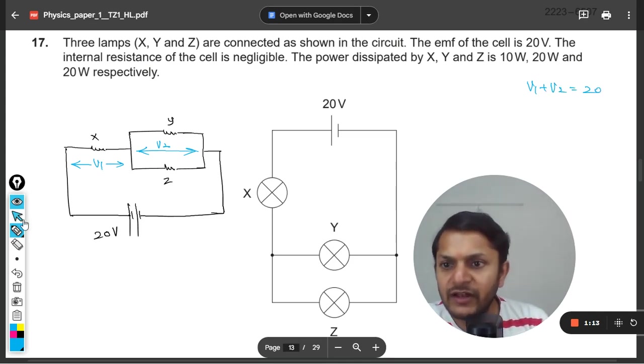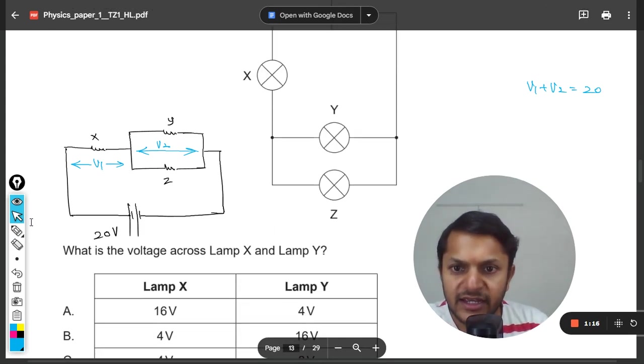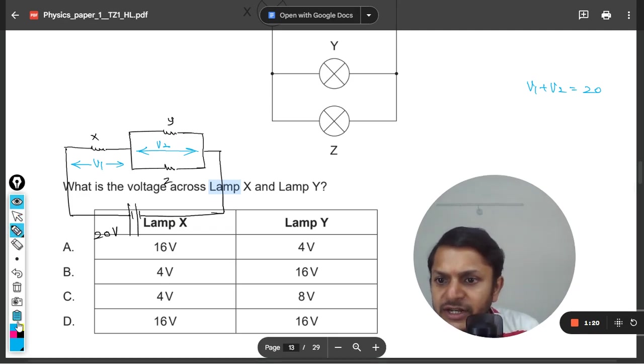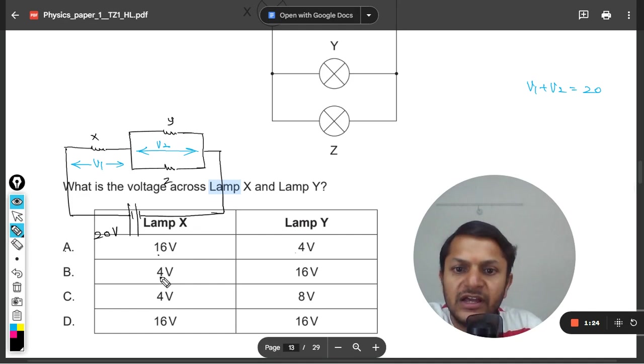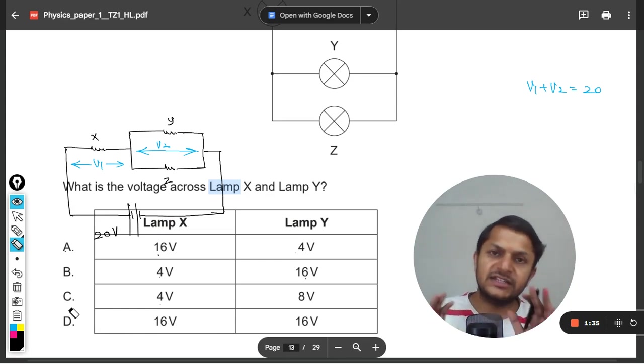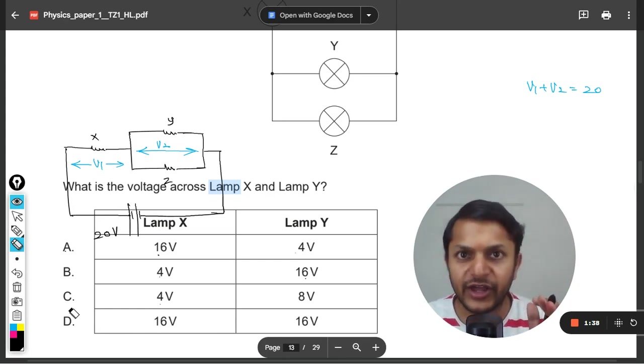Now one thing is sure: the sum total of V₁ and V₂ will be equal to 20 volts. With this information, we can clearly cross some of the options here. Let's see. Option A: 16 + 4 is 20. Option B: 4 + 16 is 20. Option C: 4 + 8 is 12, so C is wrong. Option D: 16 + 16 is 32, so D is wrong. Clearly the answer is not C or D. The answer will be either A or B.